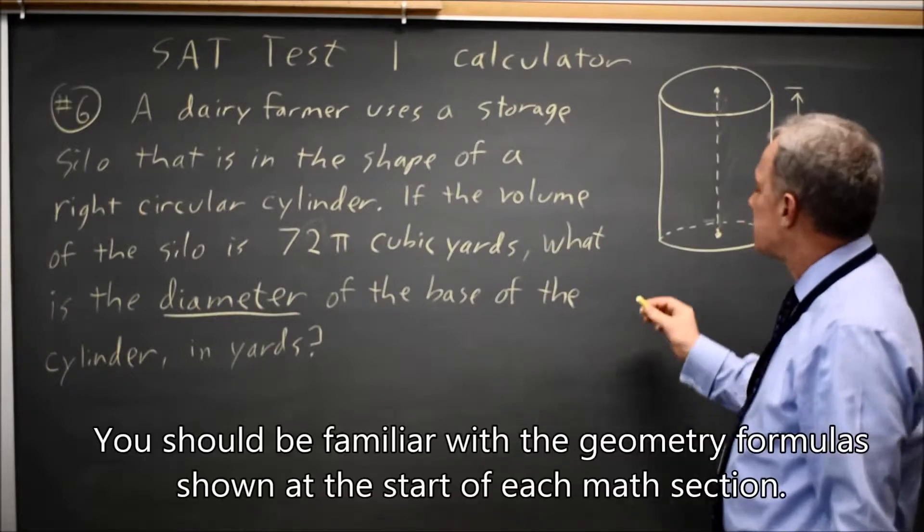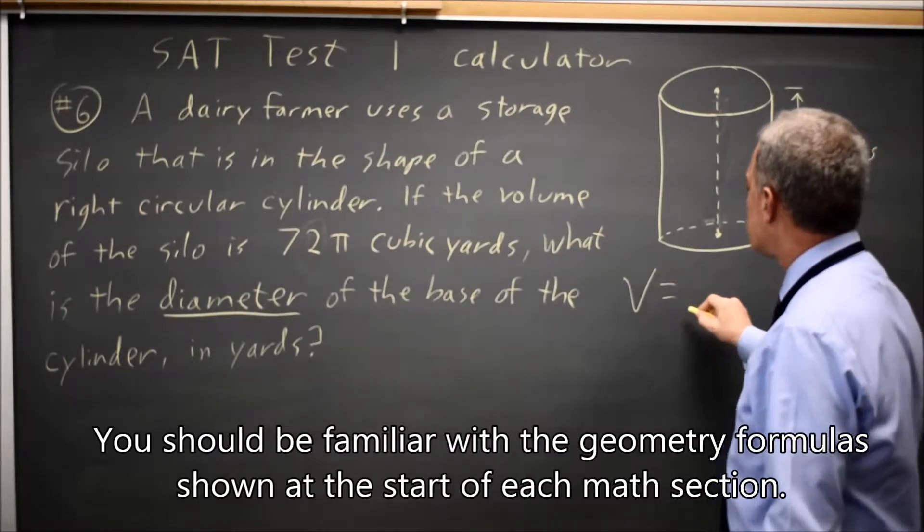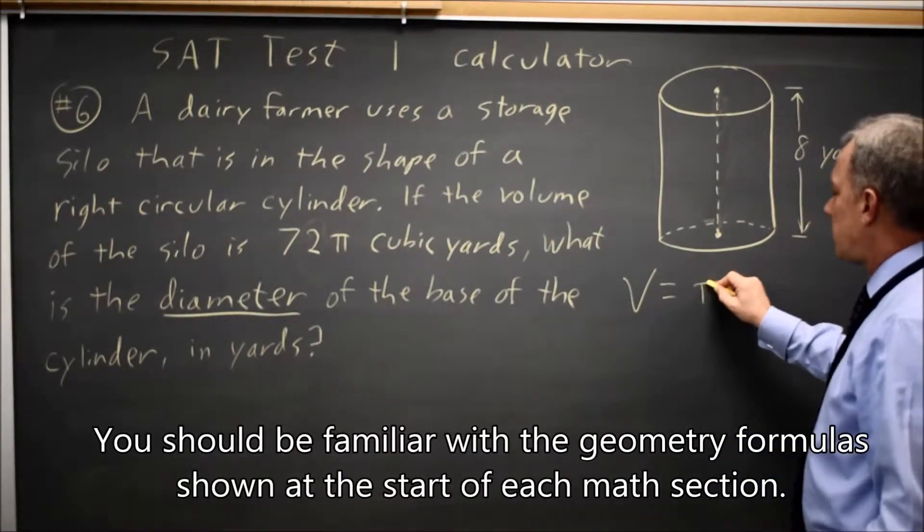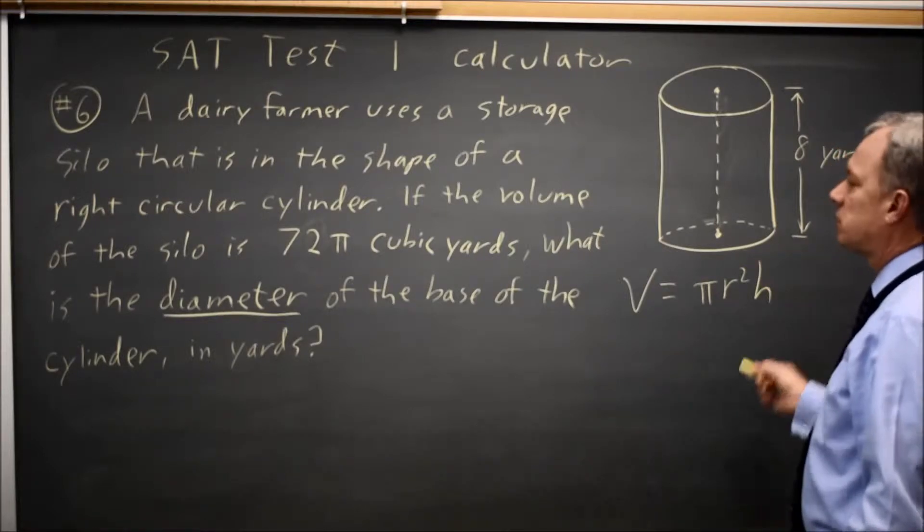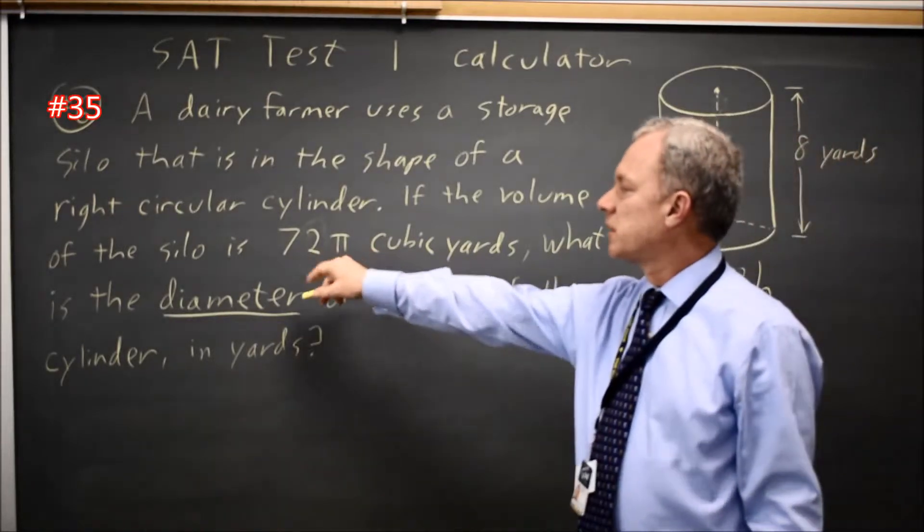If you look at the front of the section, they tell you that the volume of the cylinder is pi r squared h. Here they also told us that is 72 pi.